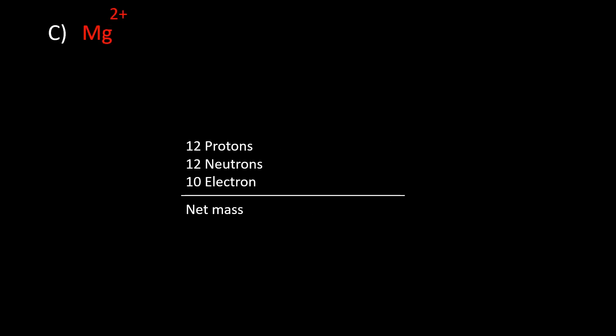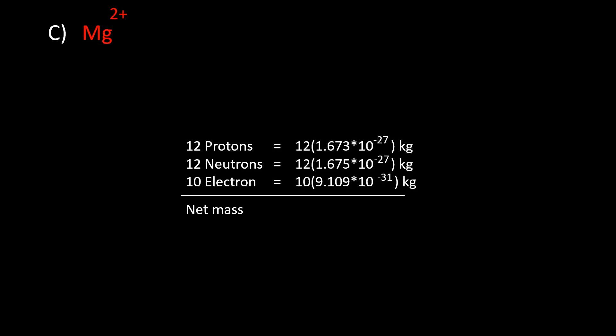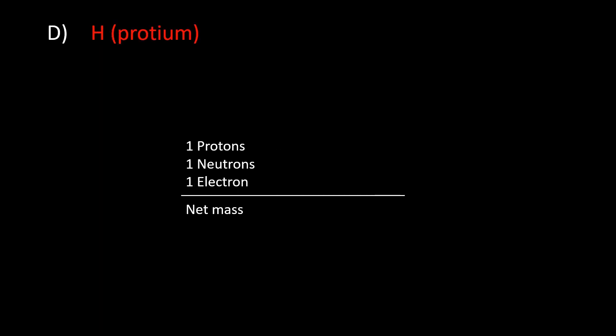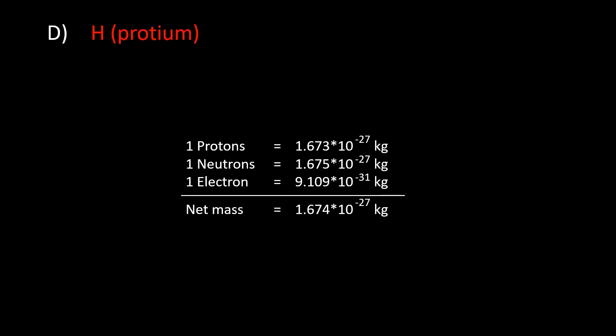For atom C, there are 12 protons and 10 electrons. By calculating the same as before, the total mass is 4.019×10⁻²⁶ kg. For atom D, there is only one proton and one electron. The total mass is simply the sum of the masses of a proton and an electron, which equals 1.674×10⁻²⁷ kg.